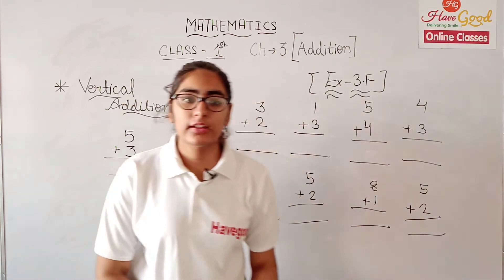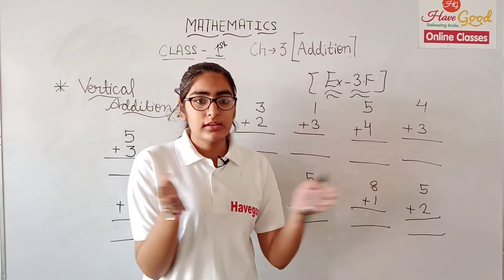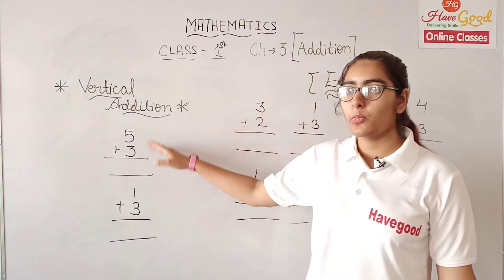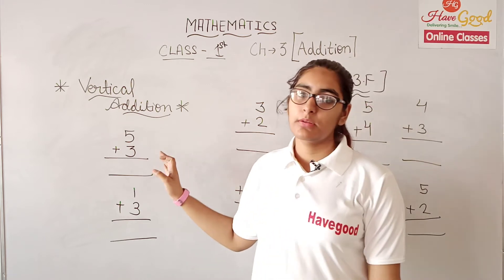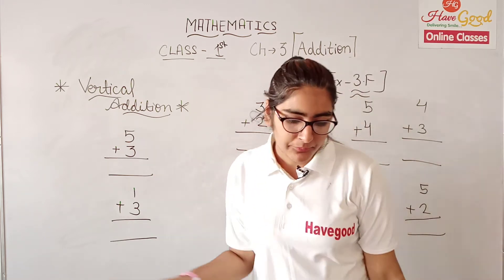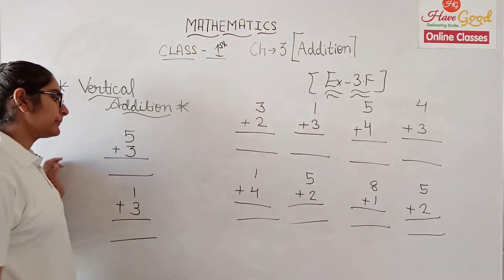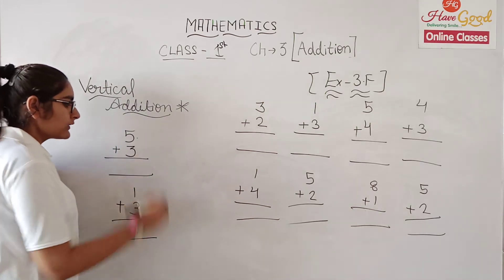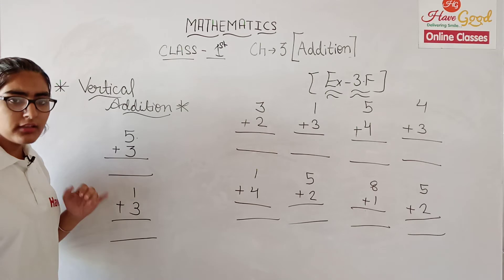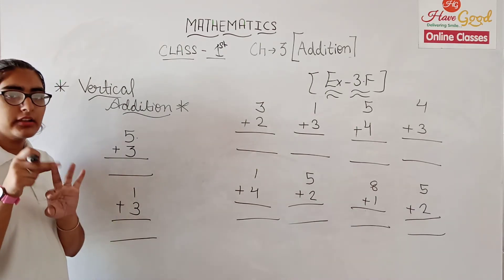So what do we do in vertical addition? In horizontal addition, we add the numbers this way. In vertical addition, we place the numbers vertically. When we add in vertical addition, let's take 5 plus 3. We do forward counting: 5, 6, 7, 8.